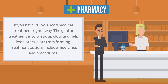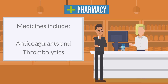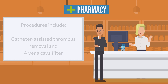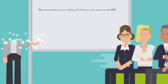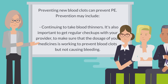If you have PE, you need medical treatment right away. The goal of treatment is to break up clots and help keep other clots from forming. Treatment options include medicines and procedures. Medicines include anticoagulants and thrombolytics. Procedures include catheter-assisted thrombus removal and a vena cava filter.